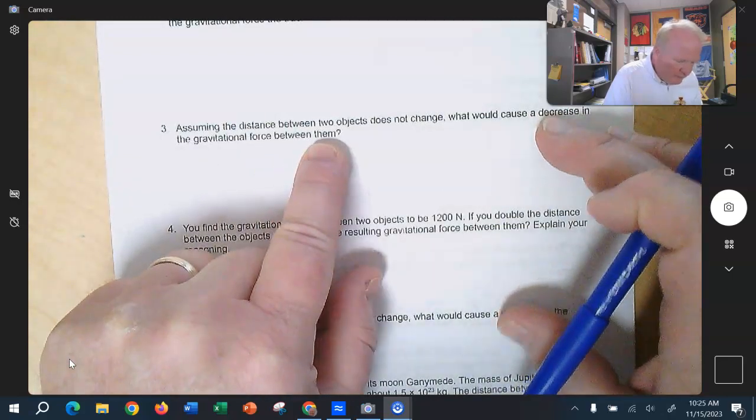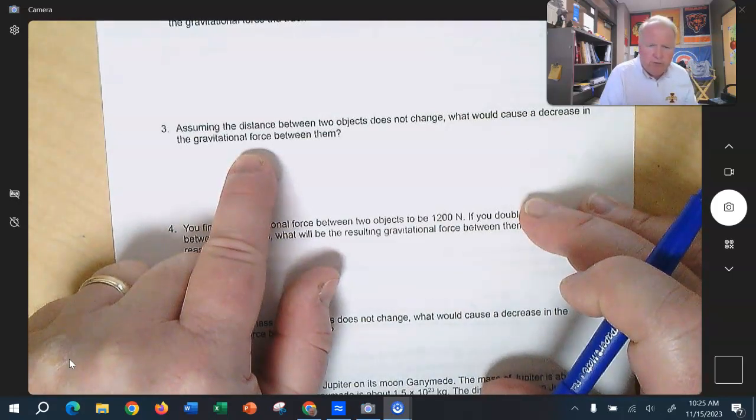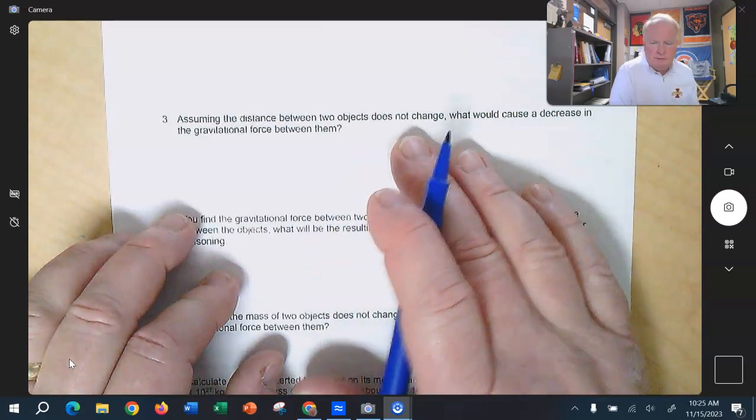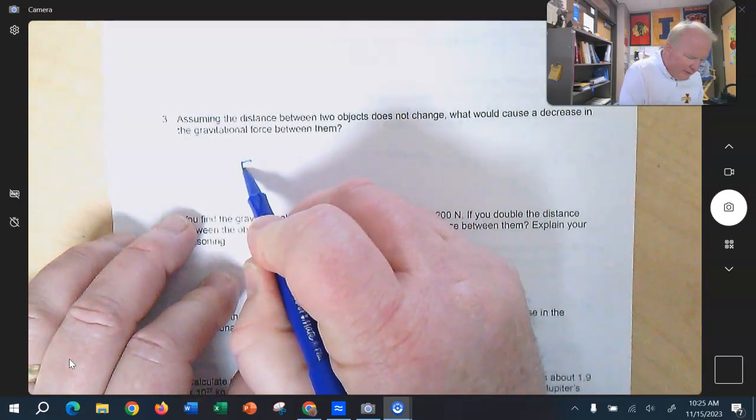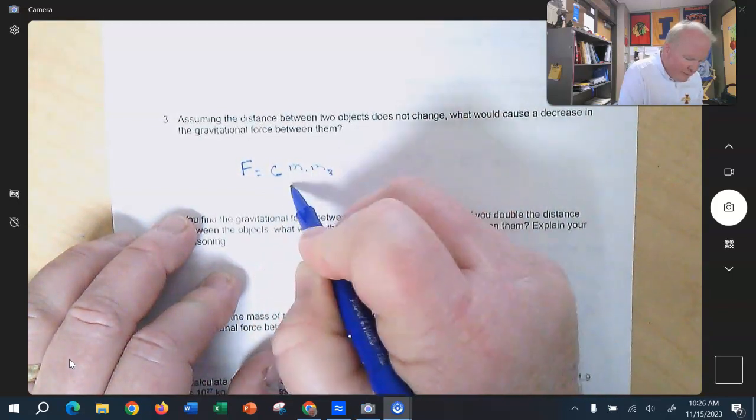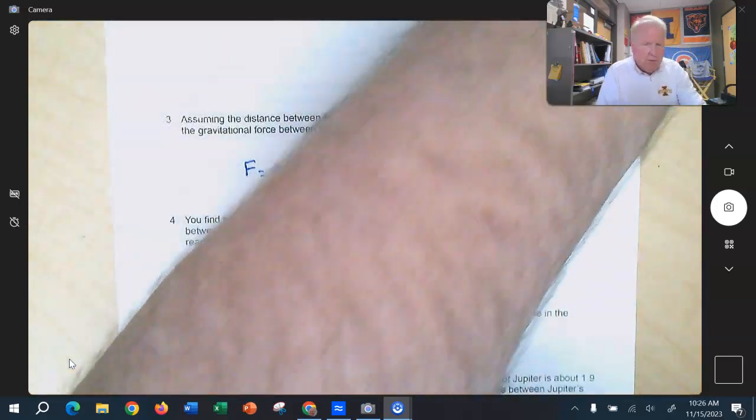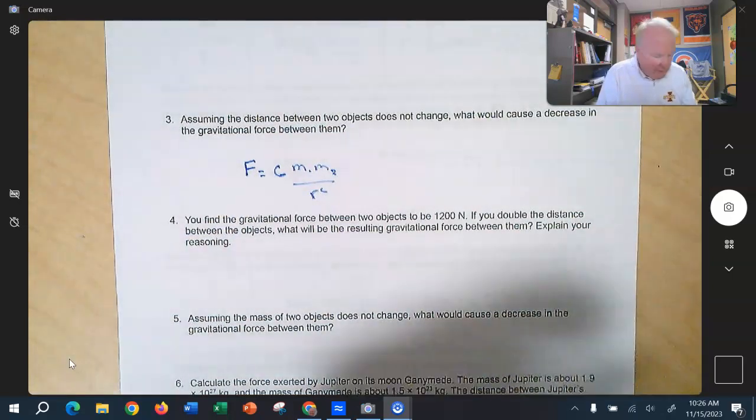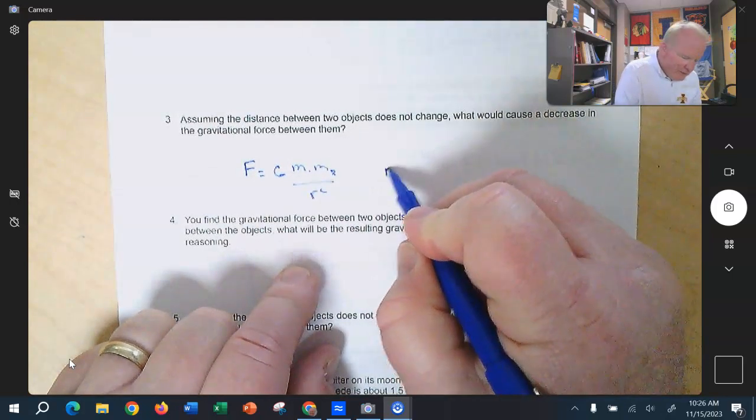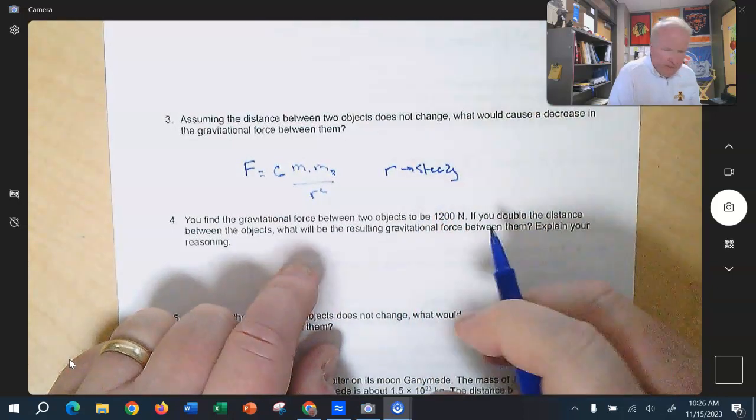It says, assuming the distance between two objects does not change, what would cause a decrease in the gravitational force? Well, in these kind of problems, when they ask you if something happens, what will happen? The first thing you should always do is write down the equation. So force is equal to G m1 m2 divided by r squared. So we've got the equation down, and then we tell ourselves, what are they telling us? They'll say, well, assuming the distance between the two objects does not change. So we cannot change r. R has to remain steady.